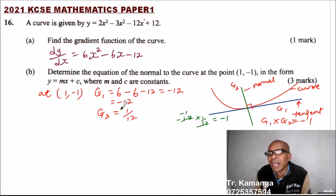So the gradient of the second line, G1, so this is the gradient of the normal. Okay. So that is the gradient of the normal.